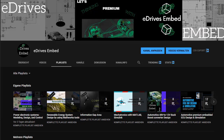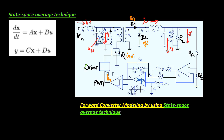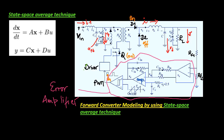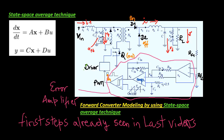Hello EdDrives Embed friends. After we have presented the state space averaging method in the last videos, to come up with multiple transfer functions that will lead to the modulator gain. The modulator is defined in this manner, circling around the control loop, the converter has a loop gain. With the error amplifier's function excluded, the rest is named the modulator.